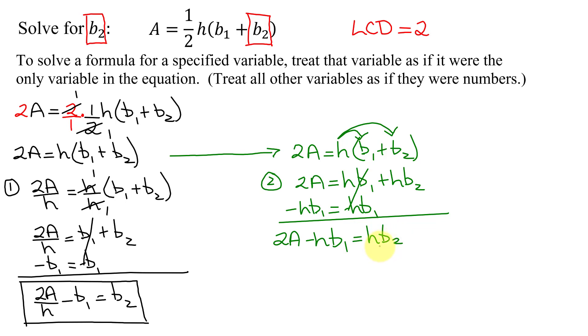To get b2 by itself, divide both sides by h. The h's reduce, so I just get left with b2 on the right-hand side.